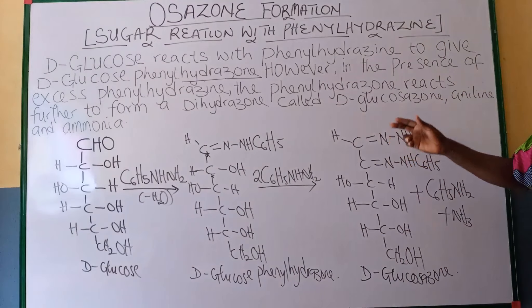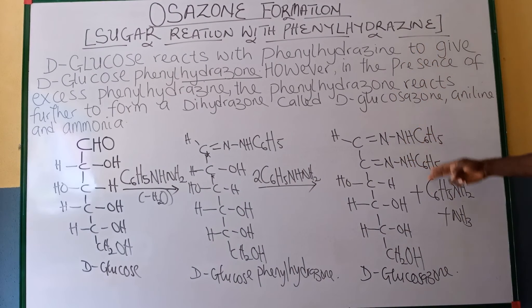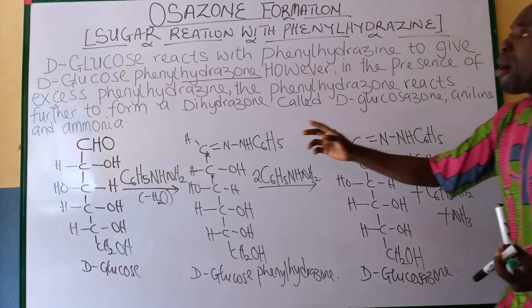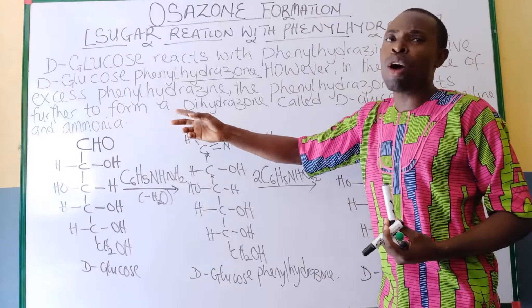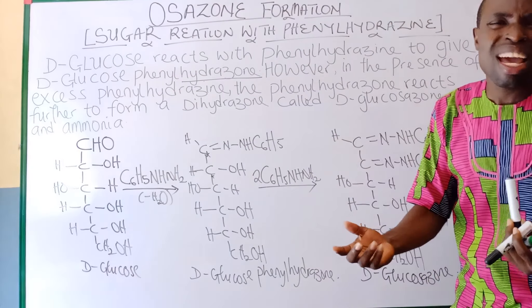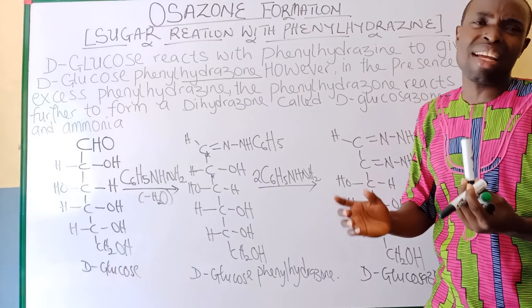That is how the scheme is. So apart from D-glucose, what we call the D-glucosazone is what we call the D-glucosazone product.